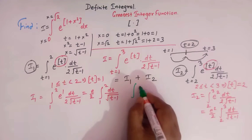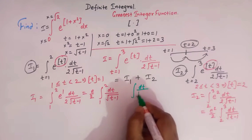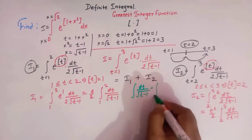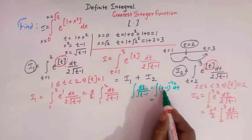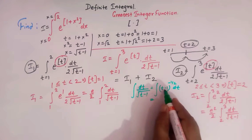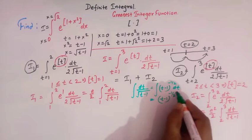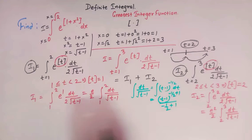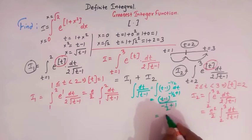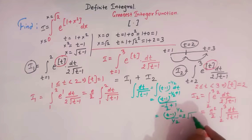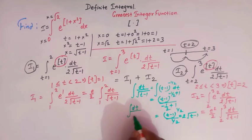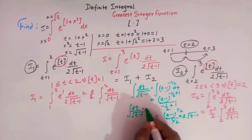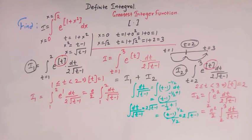Now we have the same integrand in both integrals. Let us find the value of the integral of dt over square root of t minus 1. We can write it as t minus 1 raised to negative one-half dt. The integral of this gives t minus 1 raised to one-half over one-half, which equals 2 times square root of t minus 1.